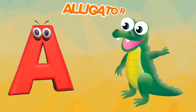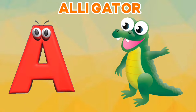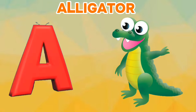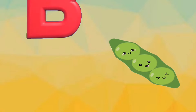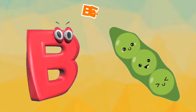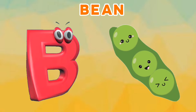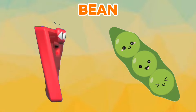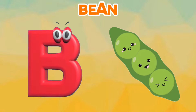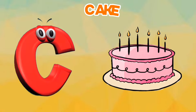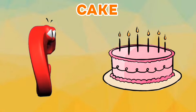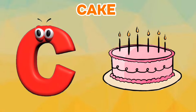A is for Alligator. A, A. Alligator. B is for Bean. B, B. Bean. C is for Cake. C, C. Cake.